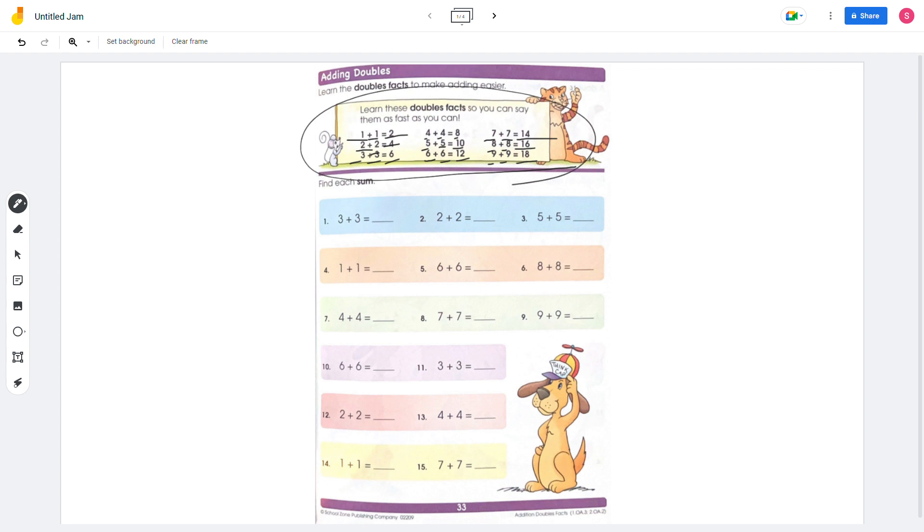We will use this to solve these problems. On the first problem, we have 3 plus 3 which is 6. And 2 plus 2 is 4. 5 plus 5 is 10. And 1 plus 1 is 2. 6 plus 6 is 12.